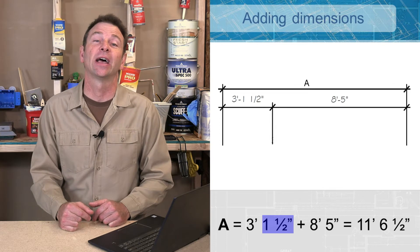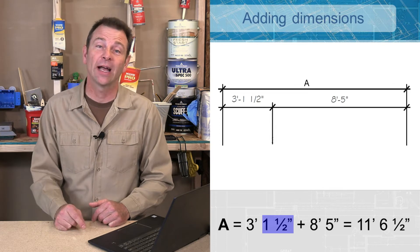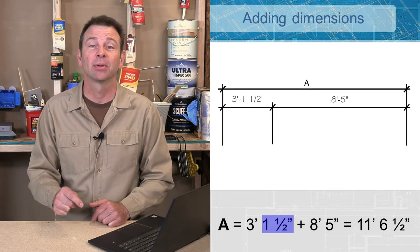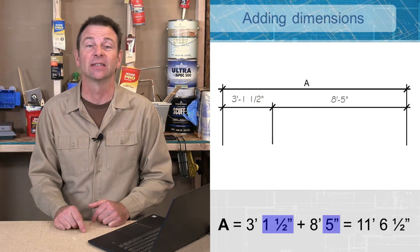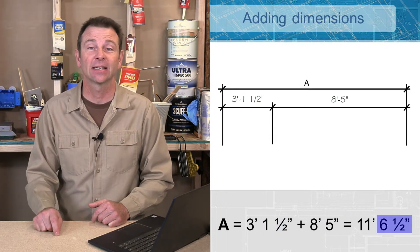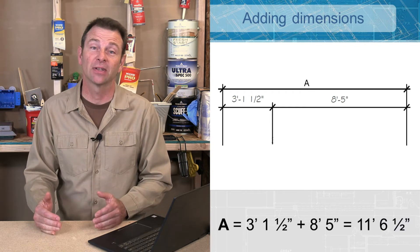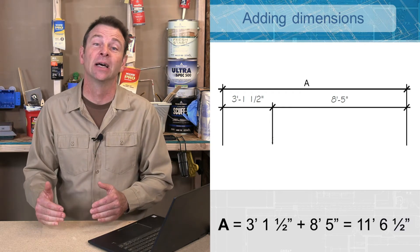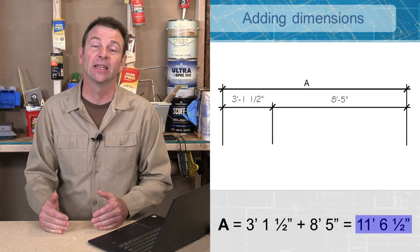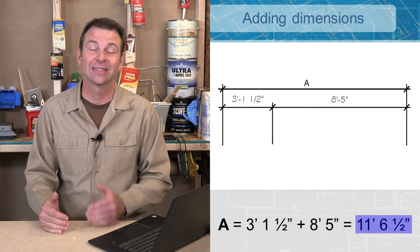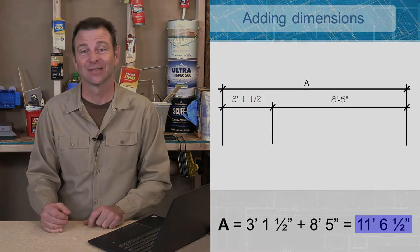Now I'm going to add my inches together. I have one and a half inches plus five inches — that's going to be six and a half inches. So my total for this is going to be eleven feet six and a half inches.